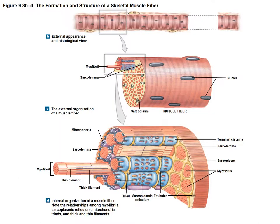A single muscle fiber is made up of many myofibrils. The myofibrils themselves are composed of a thin filament — known as actin — and a thick filament — known as myosin. Surrounding an entire myofibril is the sarcoplasmic reticulum, which contains calcium. It is connected to the outside structure of the sarcolemma via the T-tubules. The T-tubules meet the sarcoplasmic reticulum at an area called the triad region, and lead different signals down into the actual muscle cell.